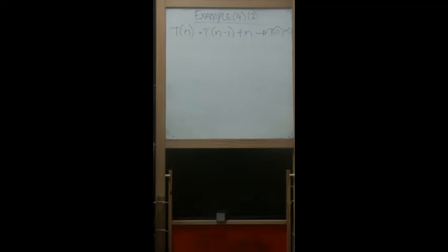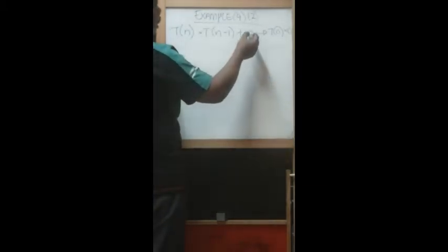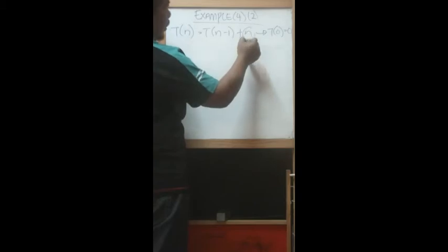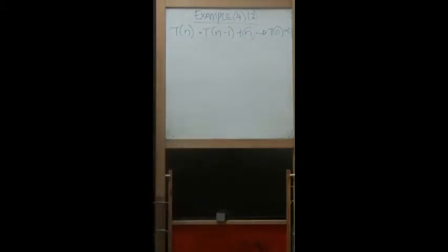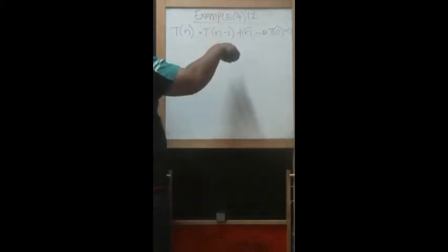This is example number 4.2. The given recurrence relation is T(n) = T(n-1) + n. The difference with this example compared to the previous ones is the plus n term. Previously it was plus 1, and before that was plus 5, a constant. But now it's n, and this n is where we need to focus.